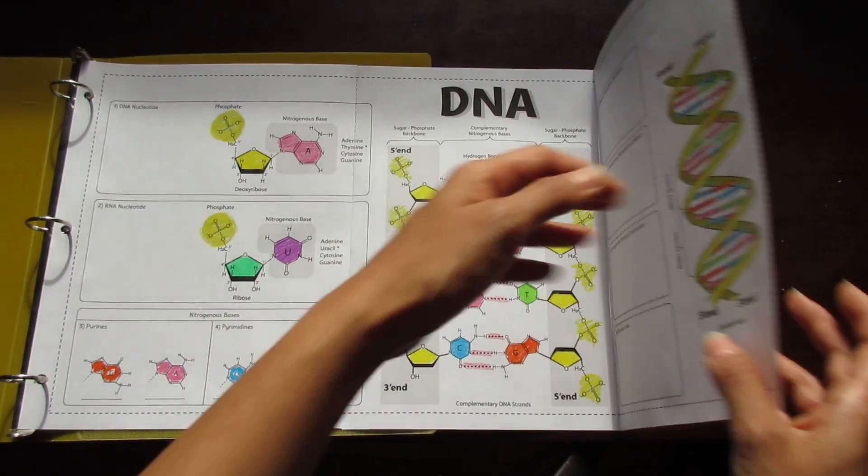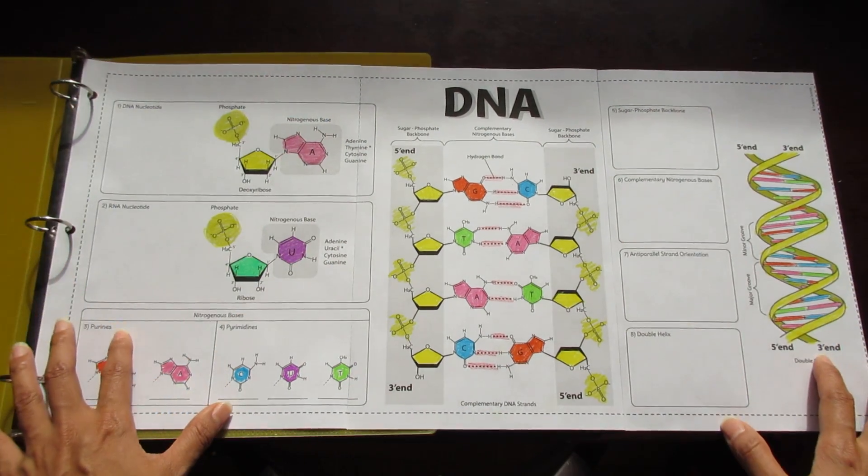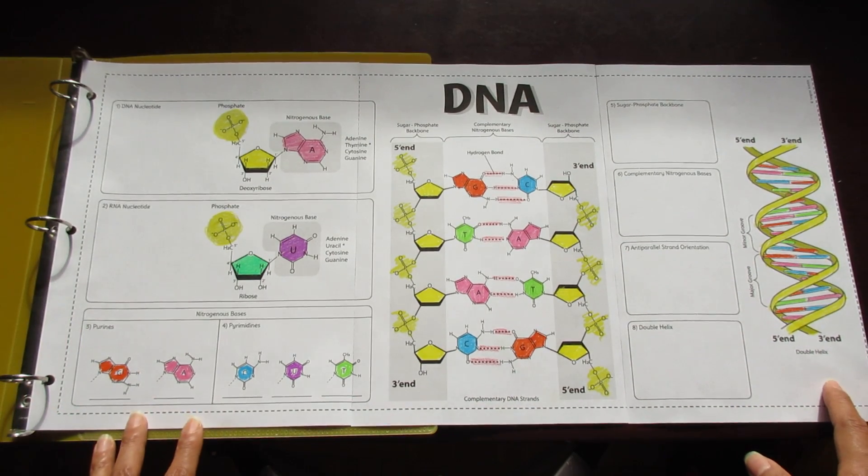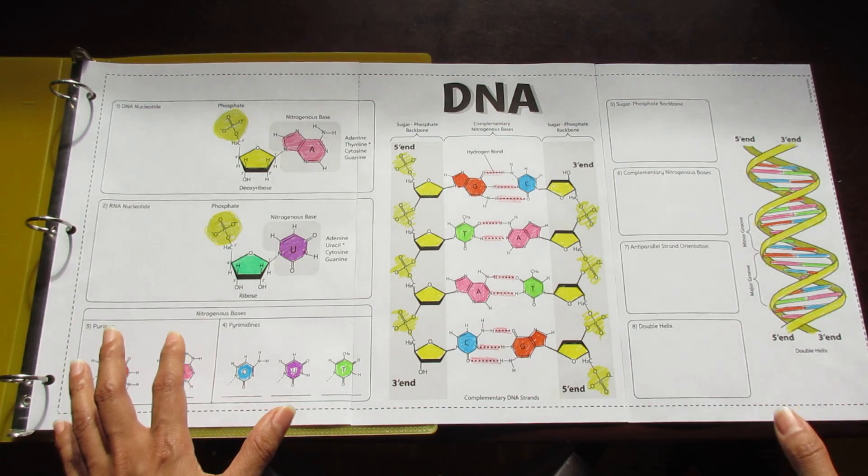If you want to use this for an interactive notebook, just cut along the dashed lines to create a smaller foldable. I've given you five different options for this particular foldable, and the one that you see before you is the most comprehensive.